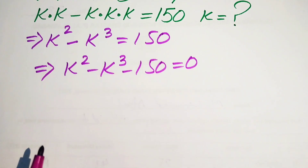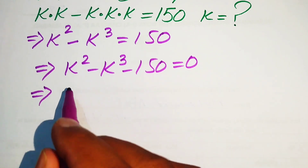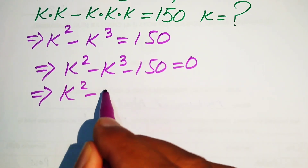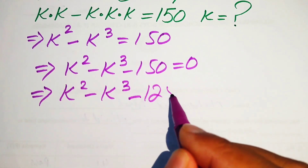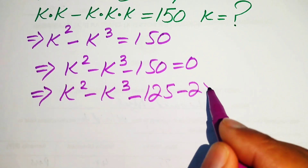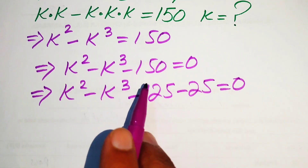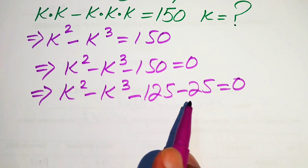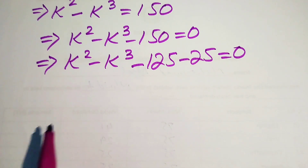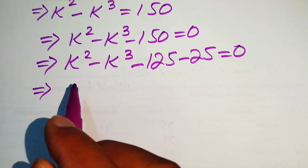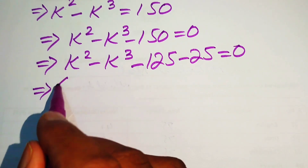We break 150 and rewrite it as k squared minus k cubed minus 125 minus 25 equals 0. We break 150 in this form, then make pairs: k squared with minus 25, and k cubed with 125.